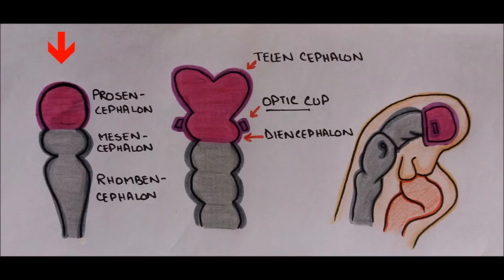The three primary brain vesicles formed are the Prosencephalon, Mesencephalon, and Rhombencephalon. The Prosencephalon, or forebrain, is later divided into the telencephalon and diencephalon. The eye arises from the diencephalon.